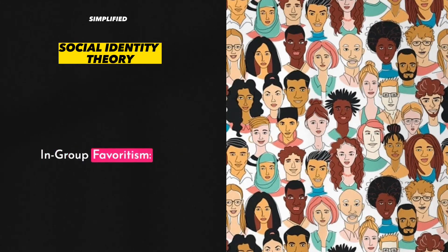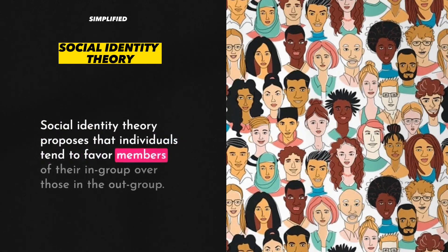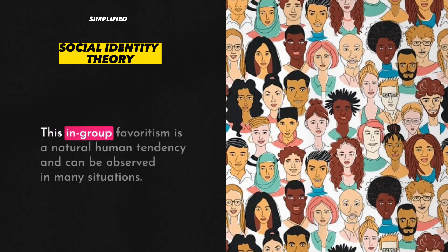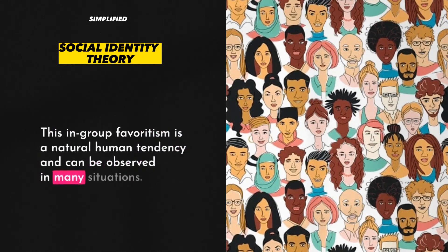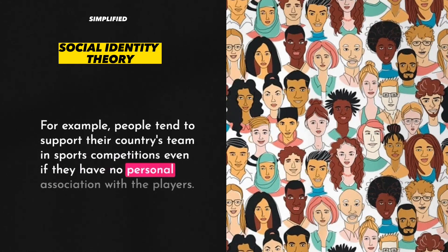3. In-group Favoritism. Social Identity Theory proposes that individuals tend to favor members of their in-group over those in the out-group. This in-group favoritism is a natural human tendency and can be observed in many situations. For example, people tend to support their country's team in sports competitions even if they have no personal association with the players.